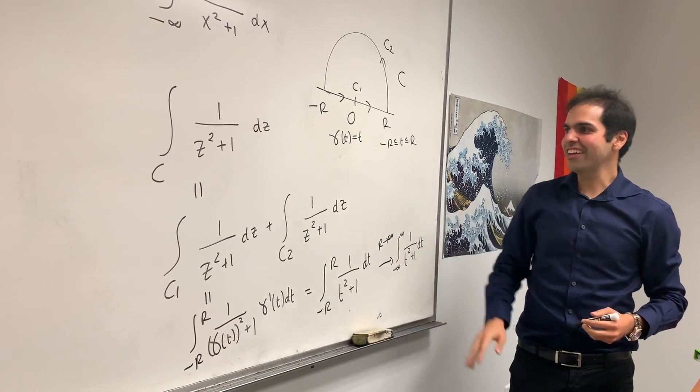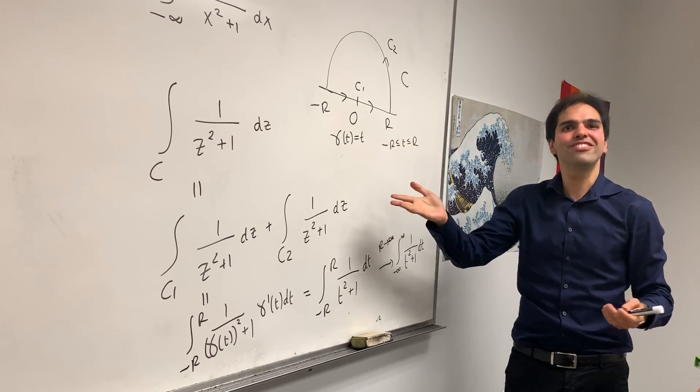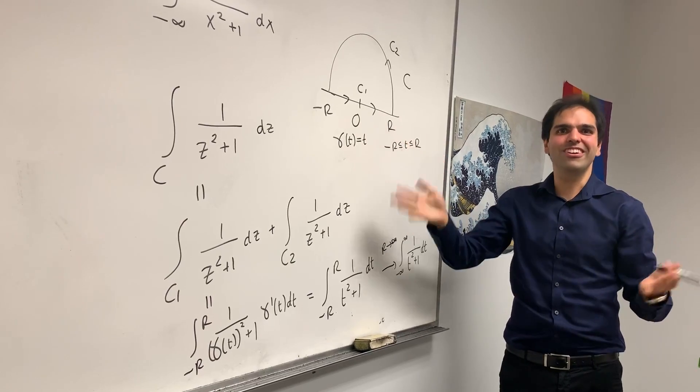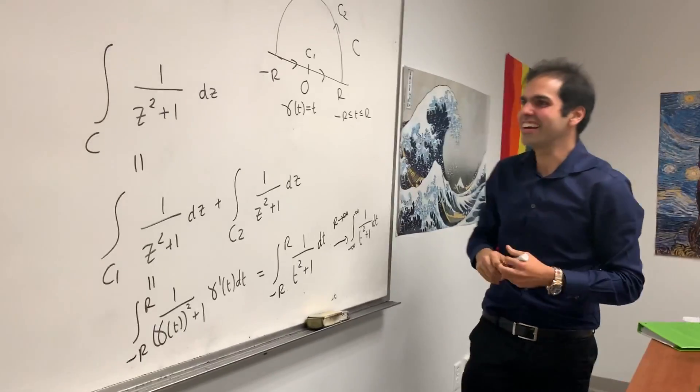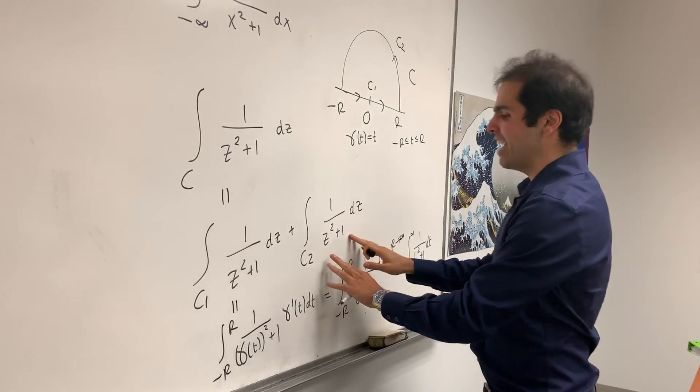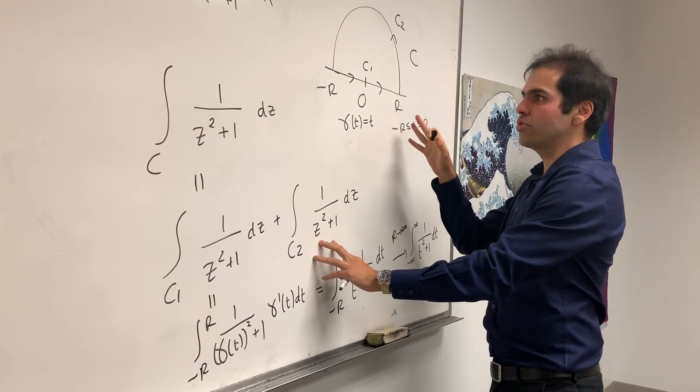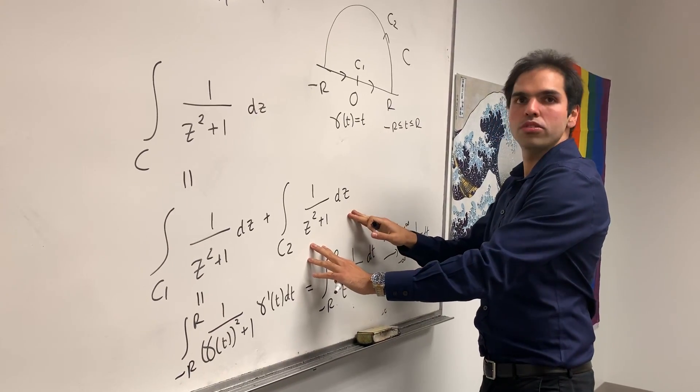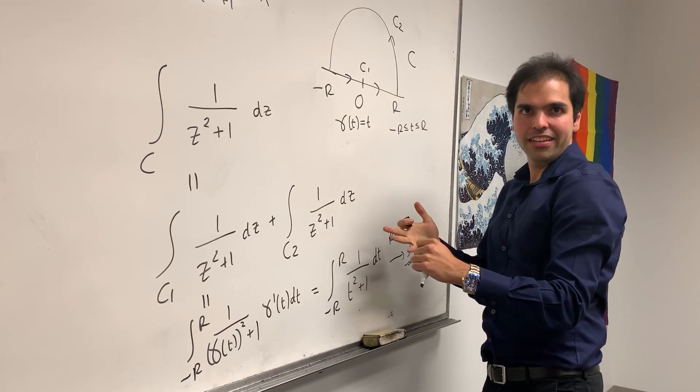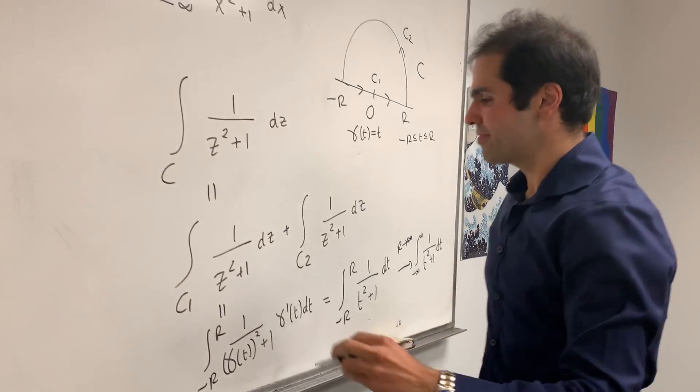Now let's focus on the second one. And I realize those problems, you're like, you want a short one. Those problems are unfortunately very long. So now what we want to show actually is that this one goes to zero as r goes to infinity. And the best way to do this is to estimate.